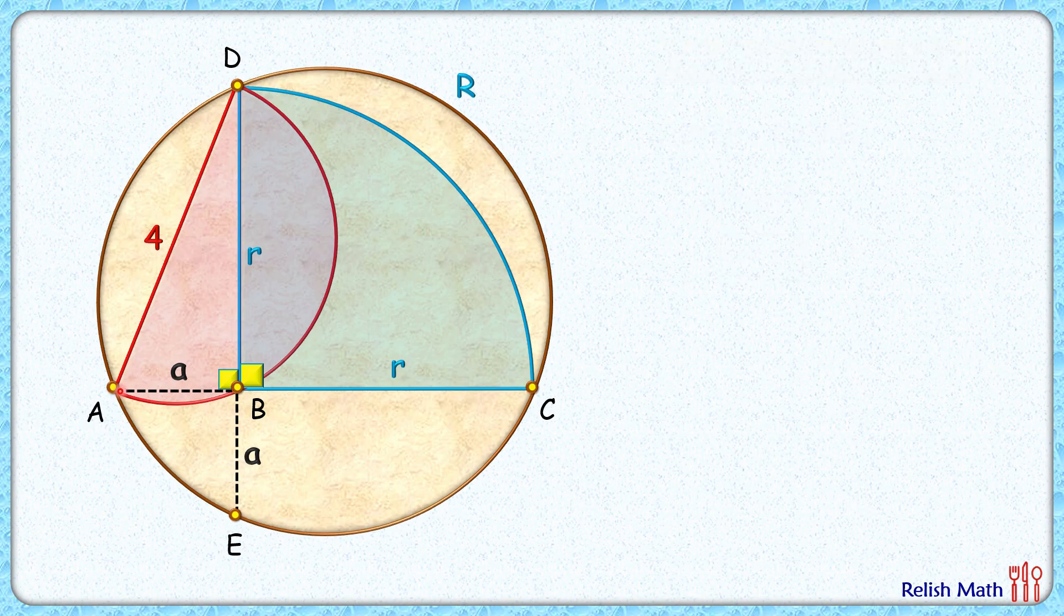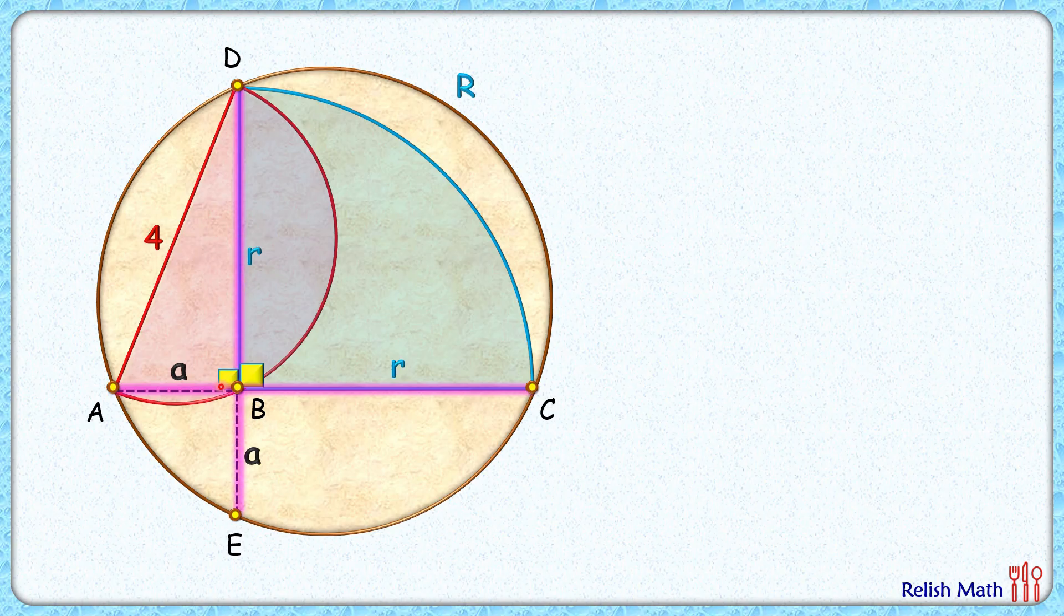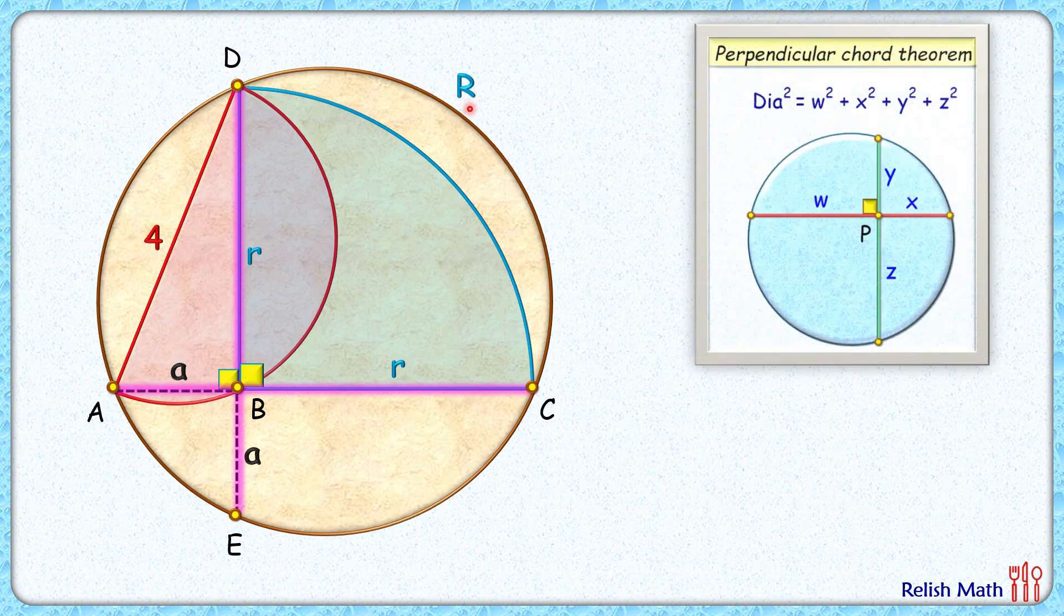Also, these two chords, chord AC and chord DE, are perpendicular to each other. To find the value of R, we'll use a very important theorem, the perpendicular chord theorem. It states that in any circle if two chords are perpendicular to each other, then the diameter squared is given by the sum of squares of all these four lengths.